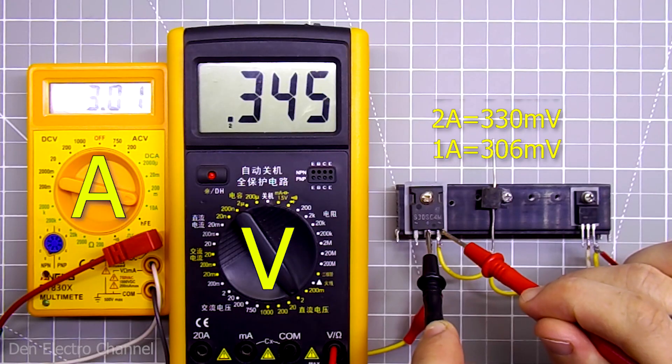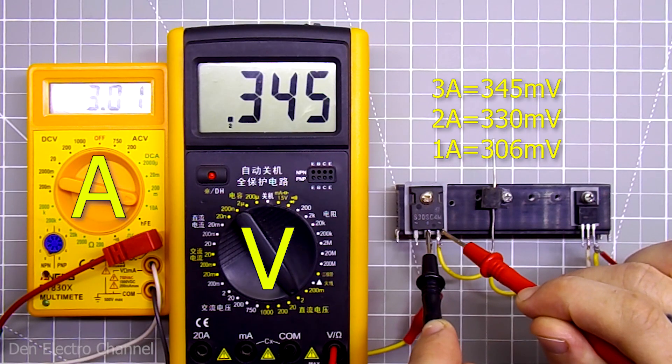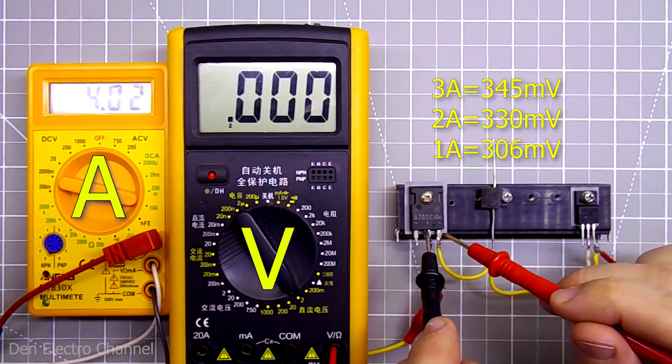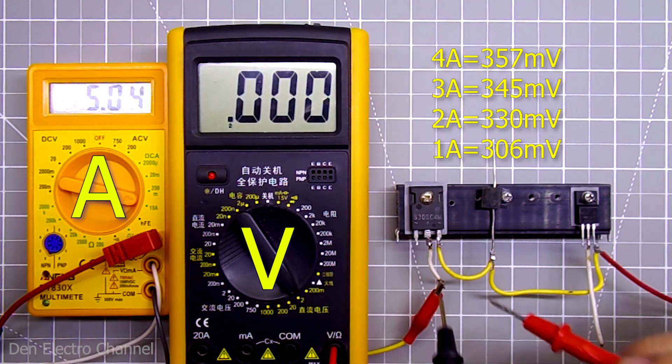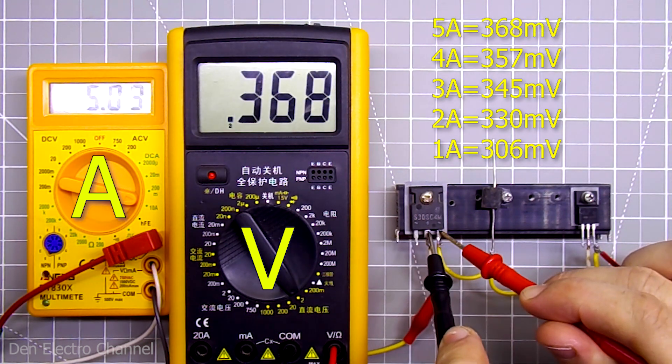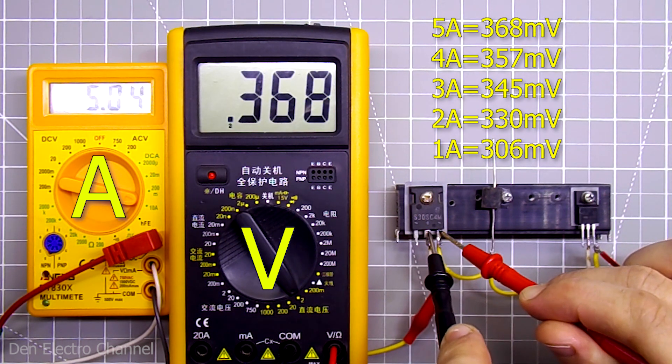With a current of 3 amps, the drop is 345 millivolts. With 4 amps, 357 millivolts. And with 5 amps, 368 millivolts.